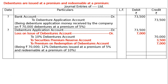The next entry: Debenture Application Account debited 73,500. Loss on Issue of Debentures Account debited — redeemable at Rs. 110, face value is 100, so 10 is premium on redemption, hence 10% on 70,000 equals 7,000. Credit: 12% Debenture Account for par value 70,000; Securities Premium Reserve Account — 5% of 70,000 is 3,500; Premium on Redemption of Debentures Account — 7,000, being 10% of debentures.